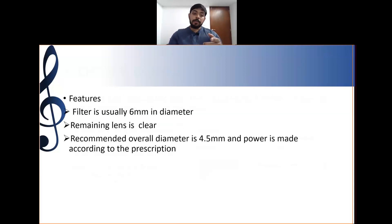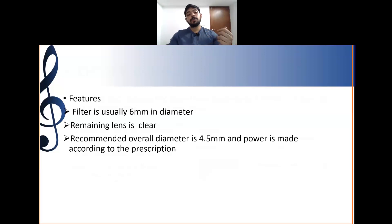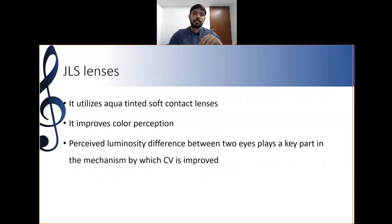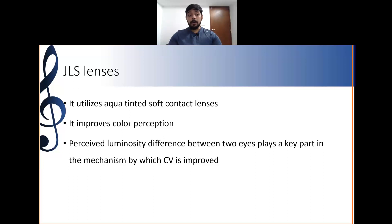The filter zone is usually six millimeters in diameter and the remaining lens is clear. The recommended overall diameter is 14.5 mm and power is made according to the prescription. JLS lenses utilize aqua-tinted soft contact lenses which improve color perception. The luminosity difference between the two eyes plays a key part in the mechanism by which color vision is improved.